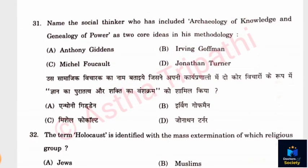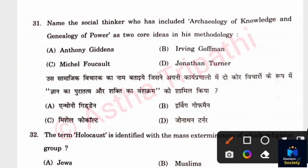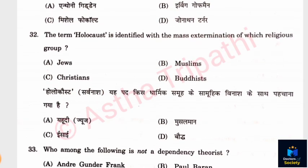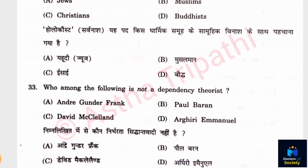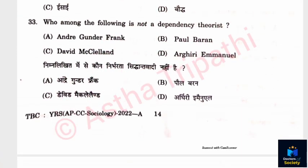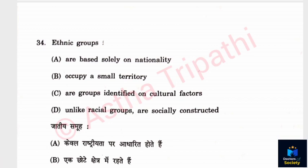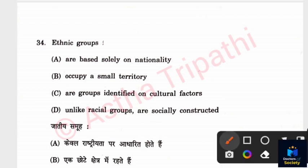Question 31: Name the social thinker who included archaeology of knowledge and genealogy of power as two core ideas in his methodology. Options: Anthony Giddens, Erving Goffman, Michel Foucault, Jonathan Turner. The answer is C — Michel Foucault. Question 32: The term Holocaust is defined with the mass extermination of which religious group? The answer is A — Jews. Question 33: Who among the following is not a dependency theorist? Options: Andre Gunder Frank, Paul Baran, David McClelland, Samir Amin. The answer is David McClelland. Question 34: Ethnic groups are best described as groups identified on cultural factors. The answer is C.